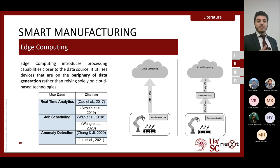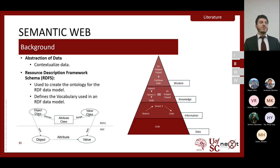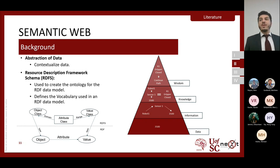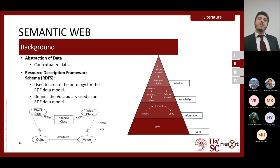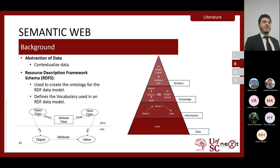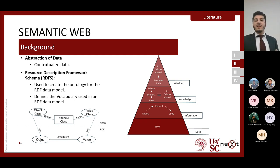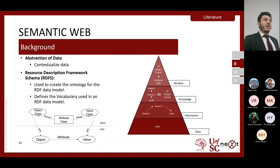The second section in the literature review is the semantic web concept. Semantic web is an effort that helps increase the interoperability of data and information between different equipment and machines, dealing with the contextualization and abstraction of data. A simple example to showcase its advantages uses the data-information-knowledge-wisdom (DIKW) pyramid. We start with raw data generated on the shop floor — it could be a value of 3,500 — which is just raw data at the bottom layer.